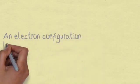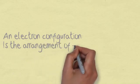An electron configuration is the arrangement of electrons in an atom.